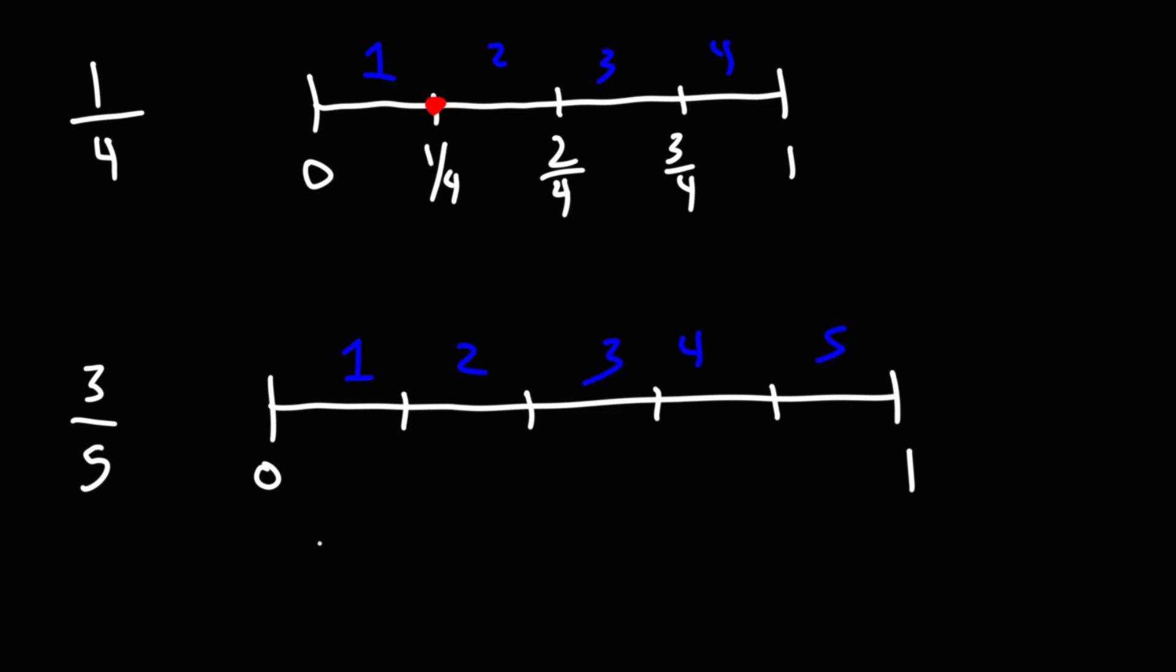Now, let's list the value of each mark using fractions. So we've got 1 over 5, 2 over 5, 3 over 5, 4 over 5, and 1 will be 5 over 5. So 3 over 5 is right there.